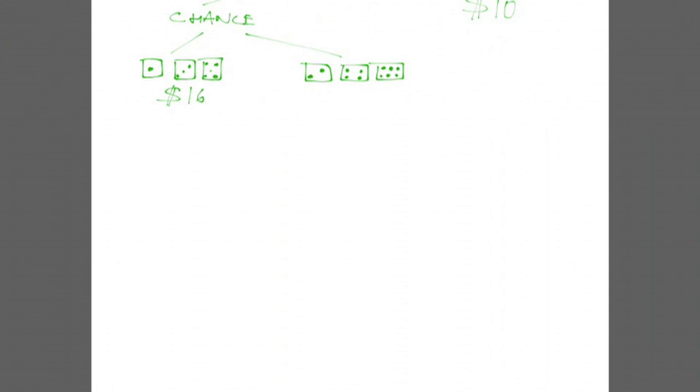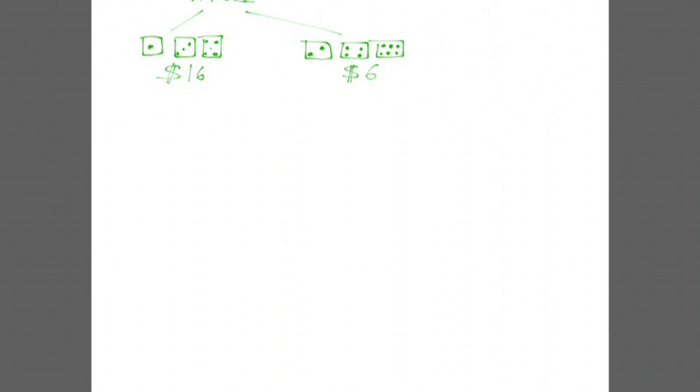Let's write down carefully what your choices are. One would be to take $10 with certainty. The other would be to play, in which case there are two possible outcomes, even or odd, and the corresponding payoffs for you would be 16 and 6. How should you decide whether to play or take the $10?